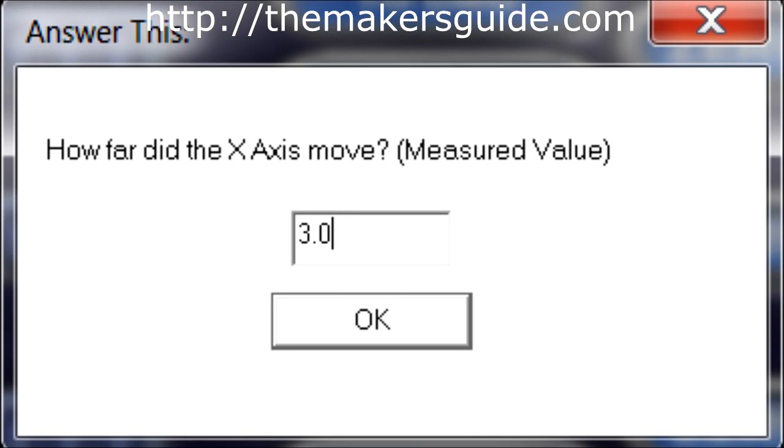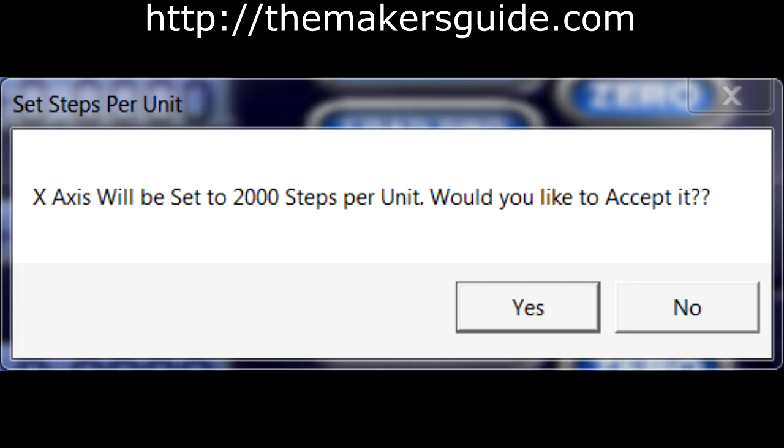Measure how far the gantry moved and enter the value into the screen on Mach3 and click OK. Mach3 will calculate how many steps per unit you need based on how far the gantry moved. Click yes if the number looks reasonable and agrees with your calculations.